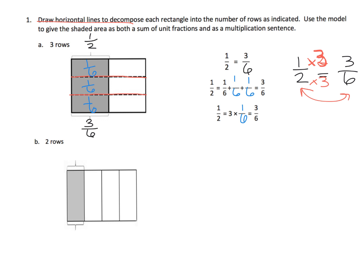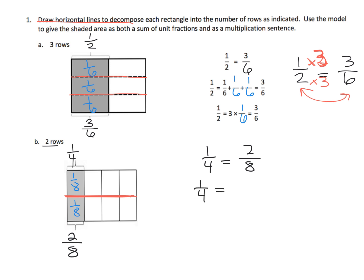Here we see that we have one-fourth, and we're being told to cut it into two rows. So I'm going to use one slice to create two rows. I can see that each of these pieces are eighths — I know they're eighths because four plus four is eight, giving us eight pieces total. So one-fourth is equivalent to two-eighths: one-fourth equals one-eighth plus one-eighth, which equals two times one-eighth, which equals two-eighths.